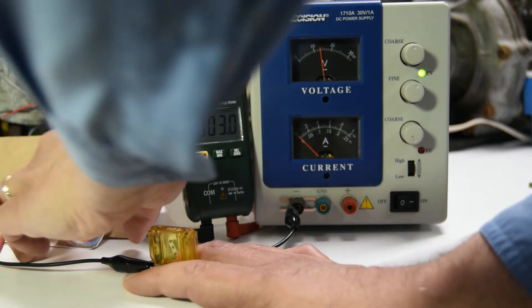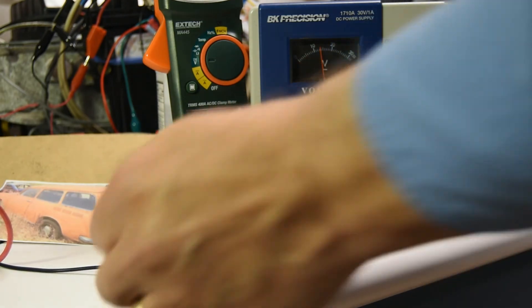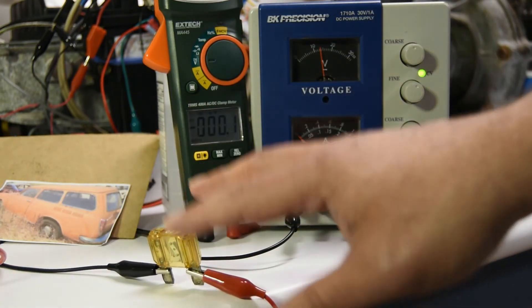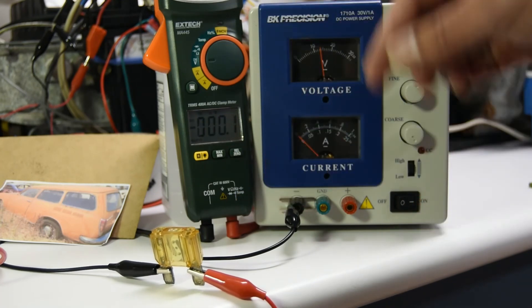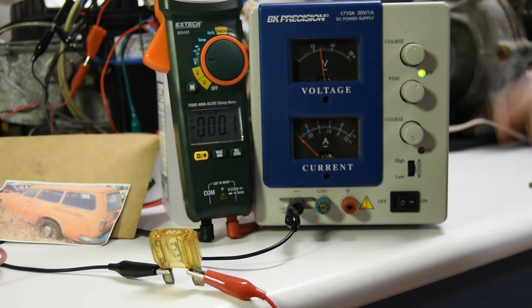So with that information, you can figure out which fuse has the biggest current draw and troubleshoot which circuit is causing your battery to go dead.